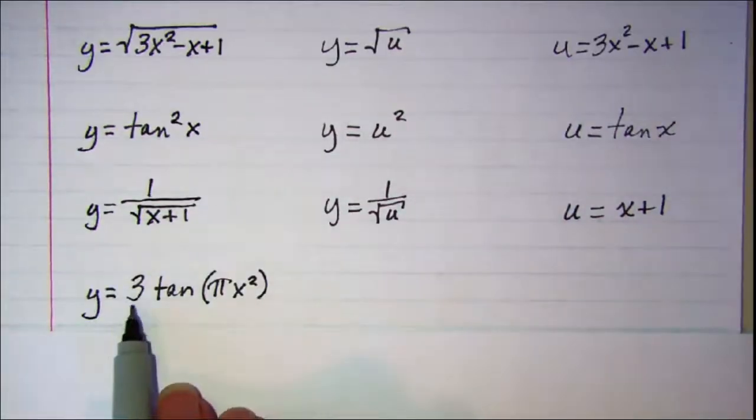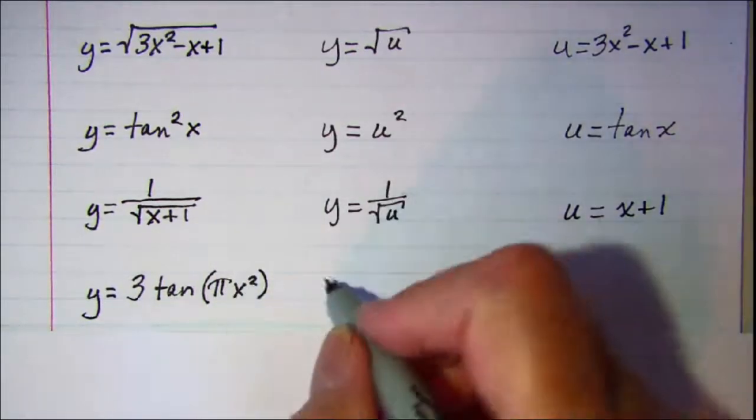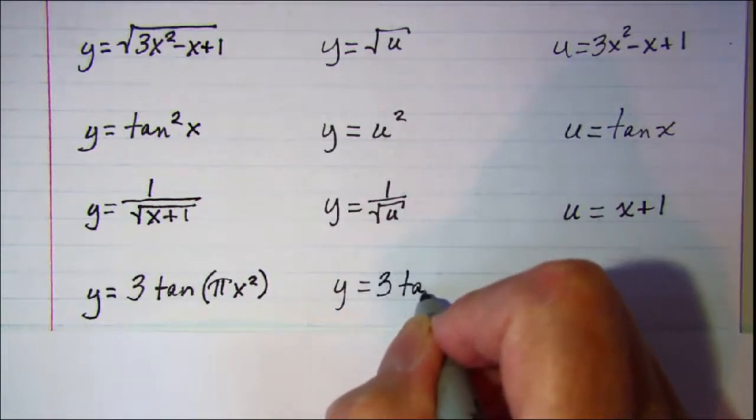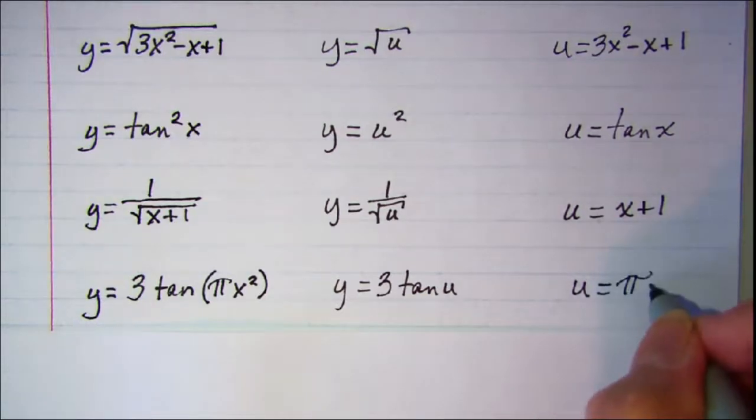On this one we have three times the tangent of something, so y equals three tangent u, and my u is equal to pi x squared.